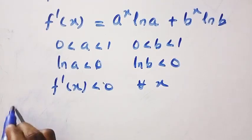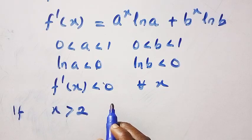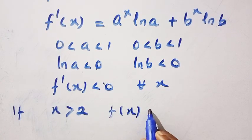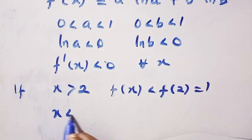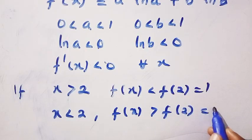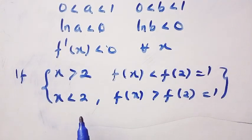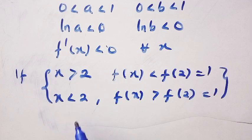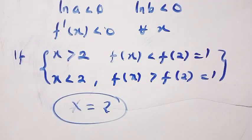Since f is strictly decreasing, if x is greater than 2 then f(x) < f(2) = 1, and if x is less than 2 then f(x) > f(2) = 1. We only want f(x) equal to 1, and because f is strictly decreasing, x equals 2 is the unique solution. This is how I solved this problem. Thanks for watching, see you in the next video — never stop learning!